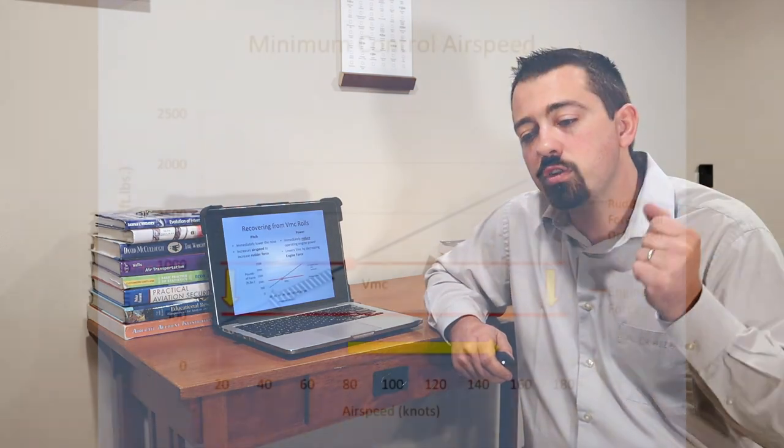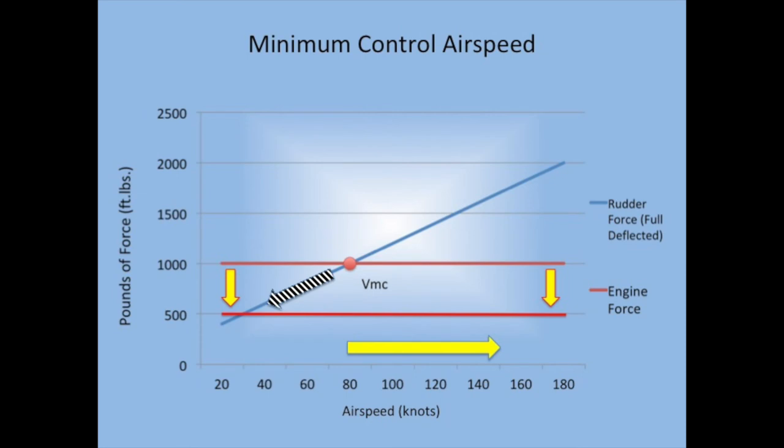The first thing is pitch. If you start to lose control of the aircraft, it starts to yaw on you and even potentially starts to roll, you want to reduce back pressure to lower the nose, regardless of what altitude you're at. Even if you're close to the ground, you want to lower the nose. The reason is, if you don't, you will lose control of the aircraft, it will go inverted, and you will crash. By lowering the nose, the pilot is going to try to accelerate the aircraft to give the rudder more authority. If we look at this graph, we're moving from a lower airspeed, VMC speed, up higher to where we have a surplus of rudder authority over the engine that is operating.